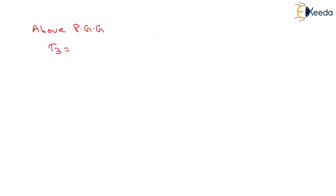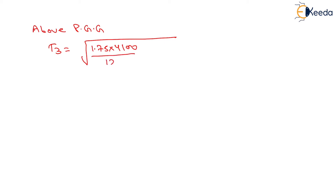Similarly, T3, the thickness above poorly graded gravel, equals √(1.75 × 4100 / 12 − 4100 / (π × 7)), where 12% is the CBR value for poorly graded gravel. This gives T3 = 20.28 cm.